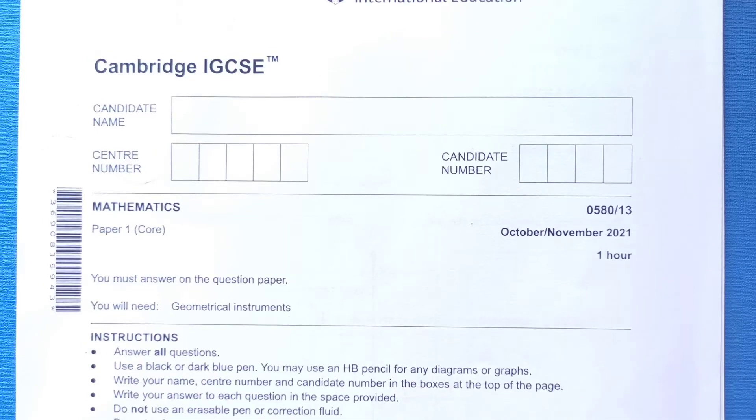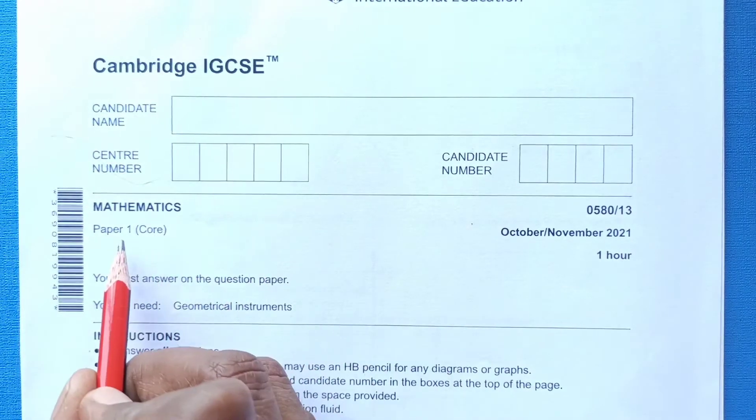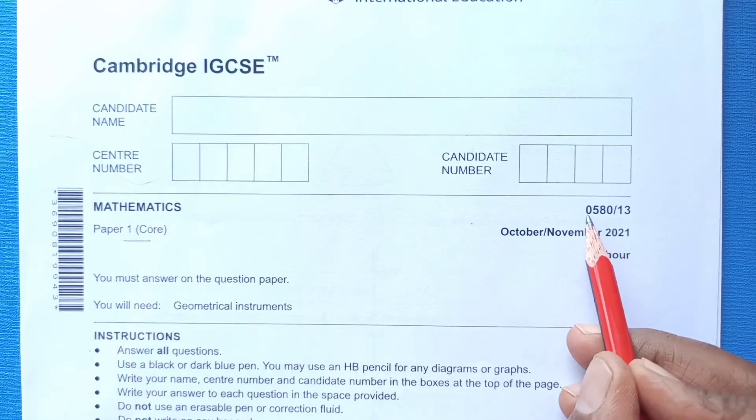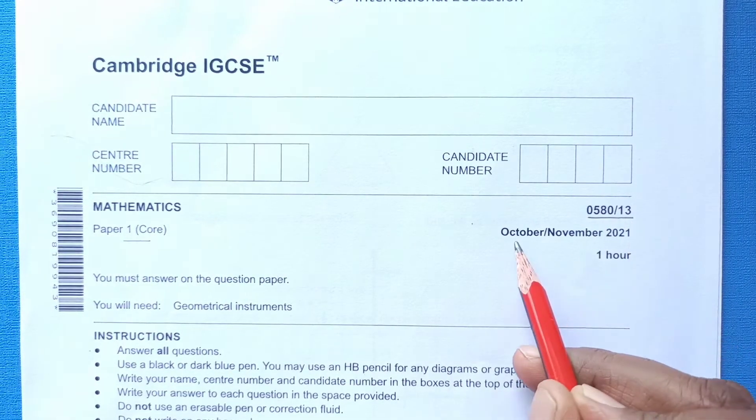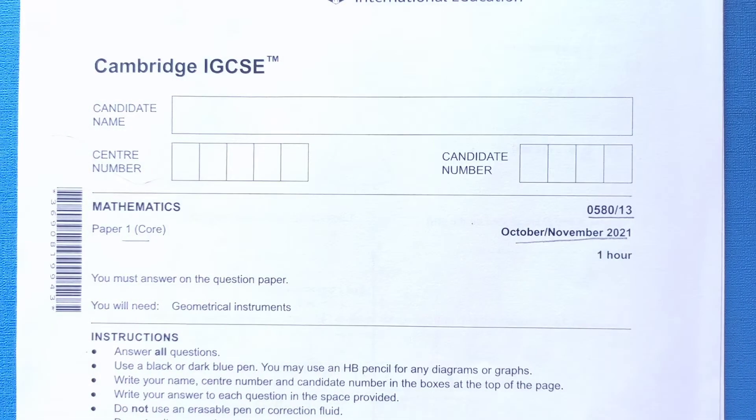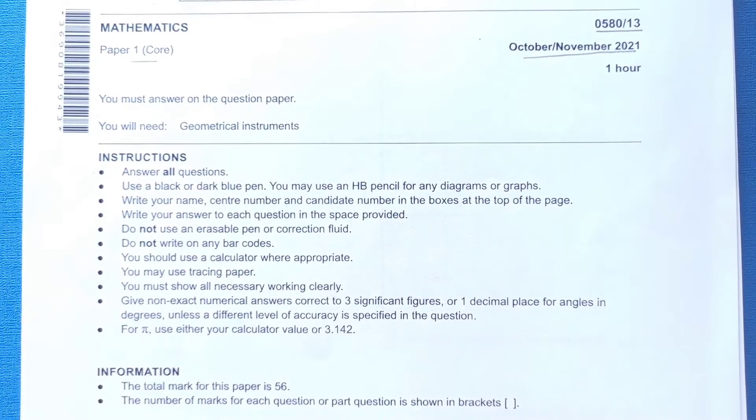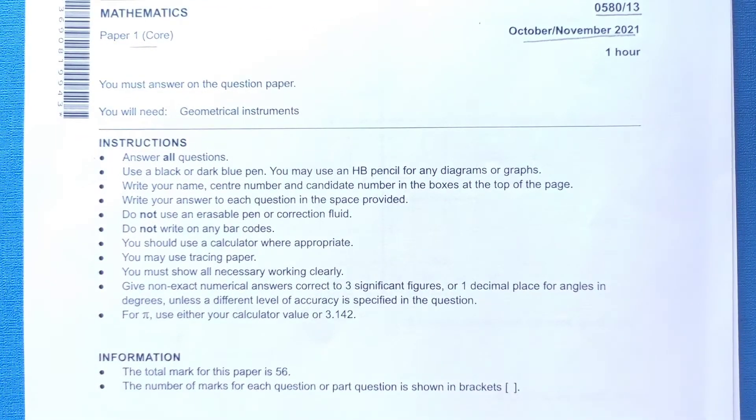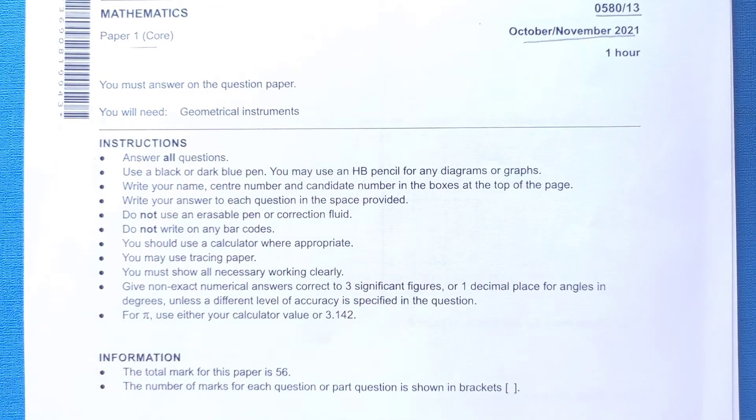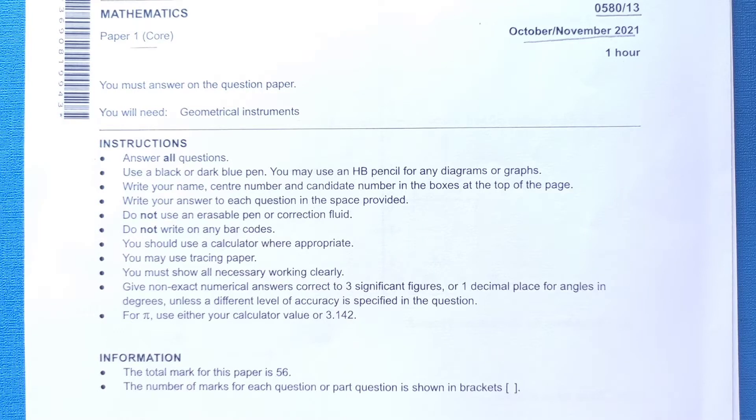Hello guys, welcome back to my channel. This is Cambridge IGCSE paper 1, 058013 from October, November 2021. Time to complete this paper is an hour. I got this paper from the Cambridge site, so this is the actual paper that was done in October, November 2021. Let us start.